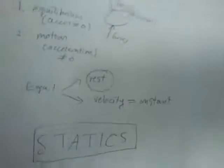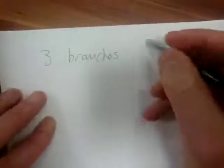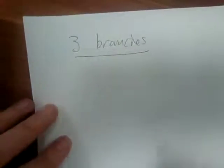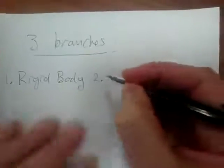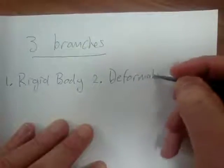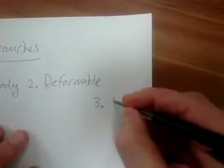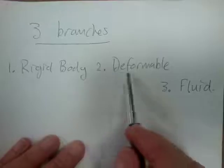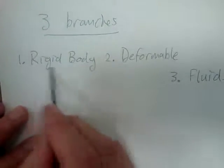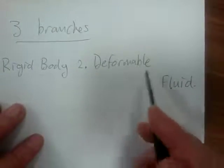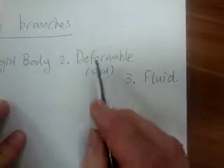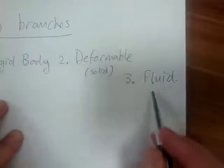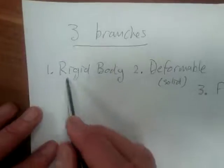The next topic is the three branches of mechanics. What we deal with in this course is rigid body mechanics. We also have deformable body mechanics and fluid mechanics. In this course we focus on rigid body mechanics. In following courses, civil or mechanical engineers will deal with deformable body mechanics — also called solid mechanics, mechanics of materials, or strength of materials — and then fluid mechanics.